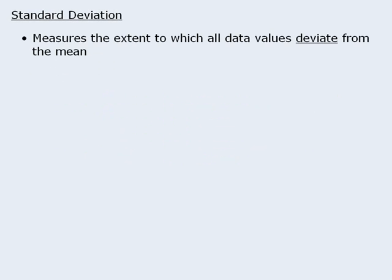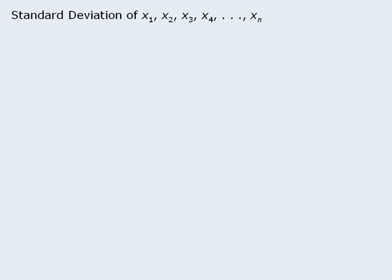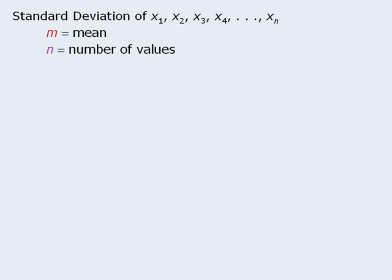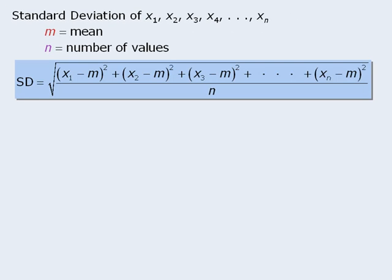That's where standard deviation comes in. The standard deviation measures the extent to which each and every number in a set deviates from the mean. Here's how standard deviation is calculated. To find the standard deviation of values from x1 all the way to xm, we will need to know the mean of the values and the total number of values. Once we have this information, the standard deviation, sd, is calculated as follows, where x1, x2, x3, and so on are the individual numbers in the set.